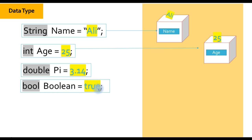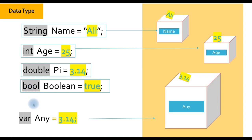Another variable data type is called 'bool', which means boolean. It contains only two values: true or false. Whenever something happens in your application or program where you need to store true or false, you can use a variable with the boolean type.